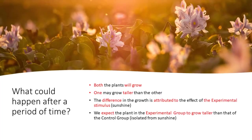What could happen after a period of time as the experiment proceeds? Suppose we observe the plant after one week — both plants will grow, but one may grow taller than the other. Why? Because one was exposed to sunshine and the other was not. The difference in growth is attributed to the effect of the experimental stimulus, that is, the sunshine. The plant in the experimental group grows taller than that in the control group, which is isolated from sunshine, the experimental stimulus.